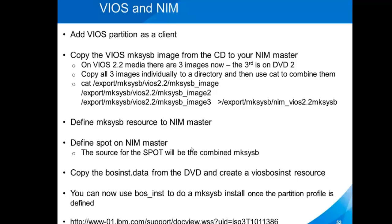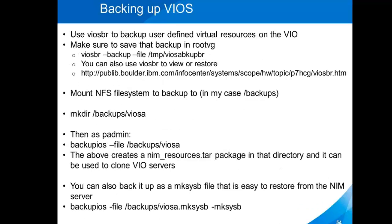Now let's talk about backing up, restoring, or cloning VIO servers. One thing a lot of people aren't aware of: if you take a makesysb of your VIO server, it doesn't back up the virtual resources — things like your SEAs. What you want to do is use the viosvr command to back up all of the user-defined virtual resources. You have to back it up somewhere that will get backed up with the real VIO server backup, such as /tmp or something in root VG. You can also use that command to browse or restore the user-defined virtual resources later.